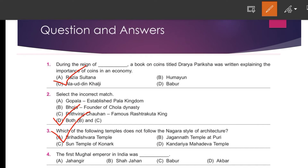Question number four: The first Mughal emperor in India was Babur.